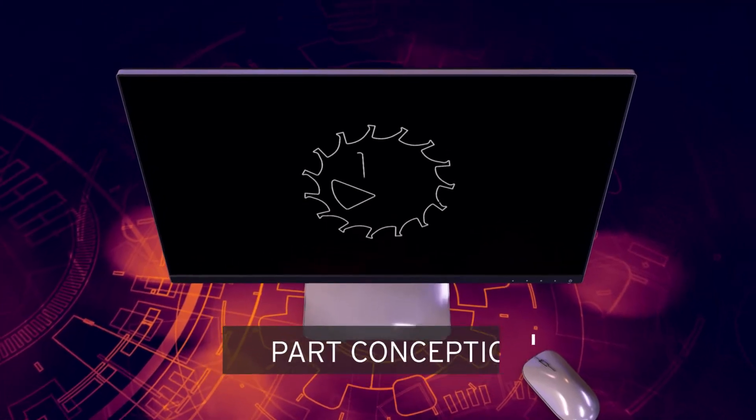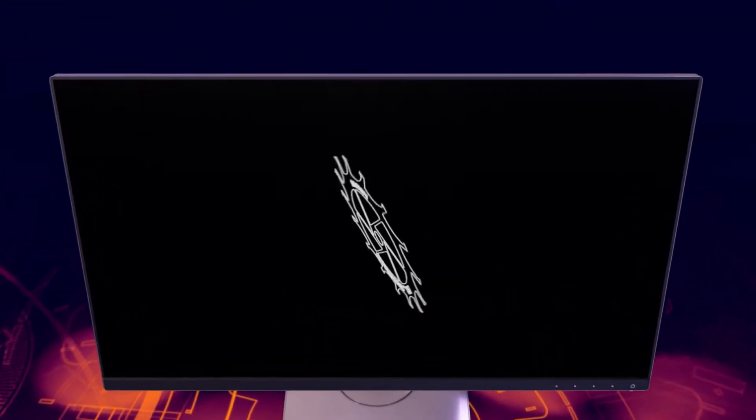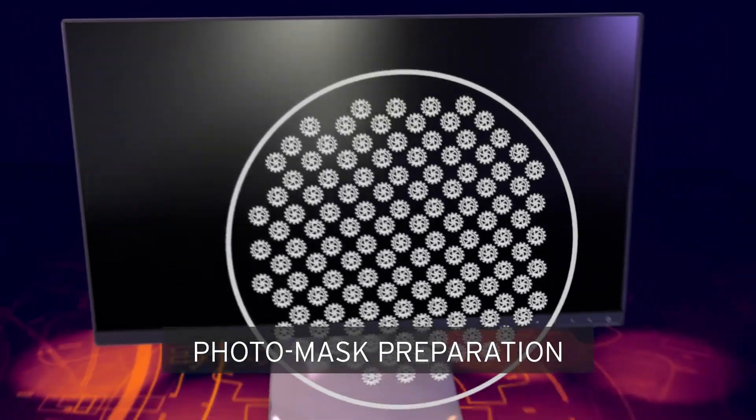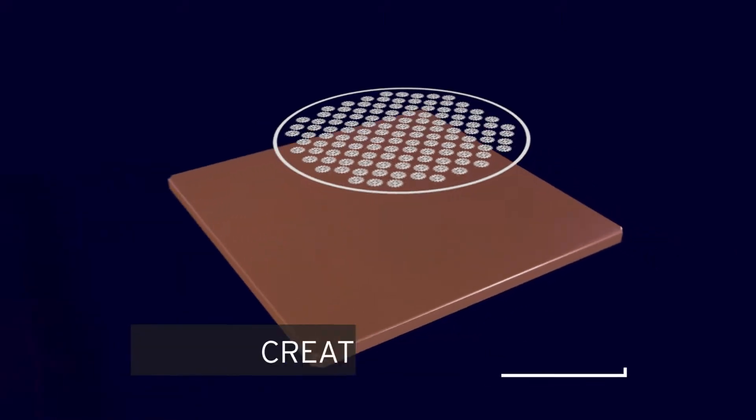Everything begins with a DXF file containing the profile of the part to be created. The contour is then adjusted to meet the technological needs. Following this, that part is duplicated so that it covers the entire usable surface of the photo mask.